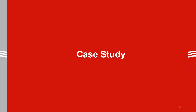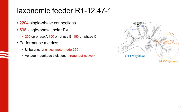Now that we have developed all the methods, we will look at our case study to compare their performance. Our test case is an R1 taxonomic feeder with more than 2200 single-phase connections. We also have close to 600 single-phase solar PV systems which are not allocated evenly between the three phases. Our goal is to mitigate voltage unbalance at critical node 359, which is located quite far from the substation. For the Steinmetz-based method, we pick another proxy critical node very close to the substation, which is node 3. We divide all the PV systems into two groups that can be independently controlled to mitigate voltage unbalance at these two critical nodes.